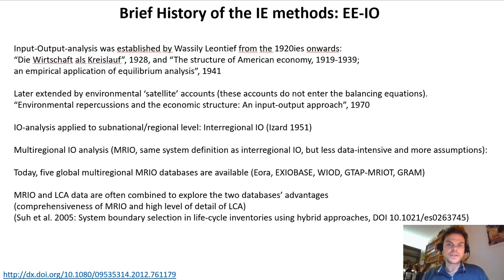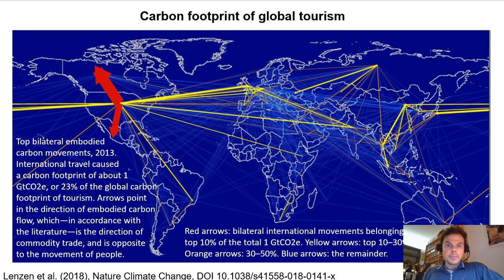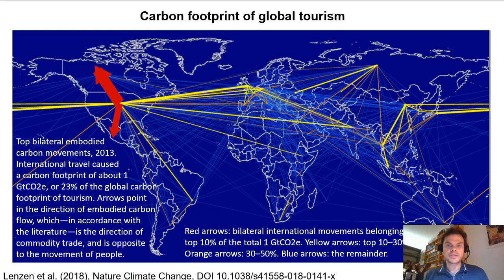Input-output analysis has been known since the 1920s and actually dates back to the French economist Quesnay from the 18th century, who started balancing the economy and considering different sectors. Multi-regional input-output analysis, which combines input-output tables from different countries, has also been known for quite a while, and in the last ten years we have had high-resolution multi-regional input-output tables available. One example application is the carbon footprint of global tourism, where we can calculate carbon emissions associated with both international and domestic tourism activities.